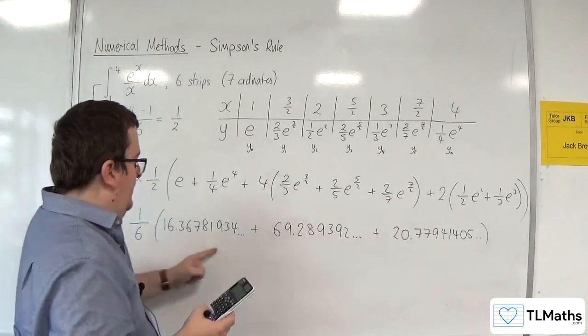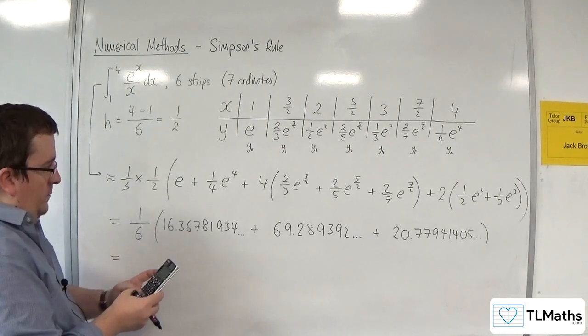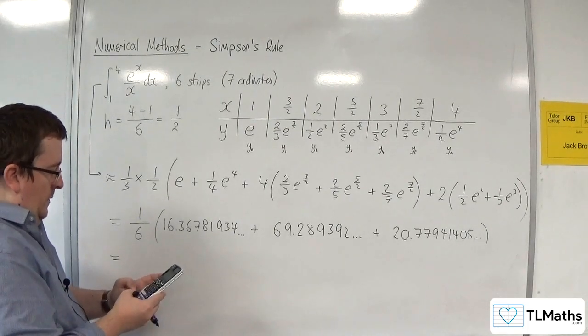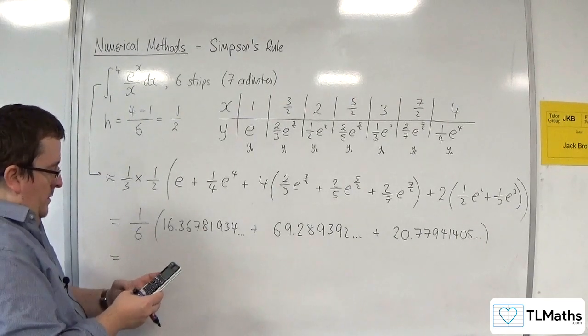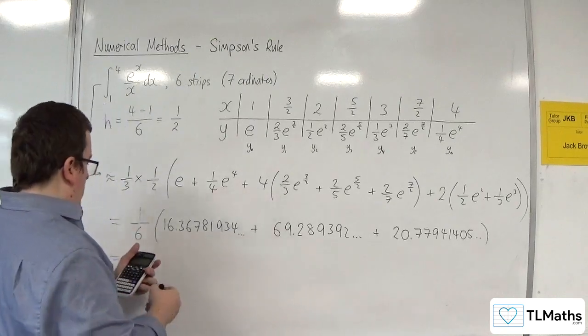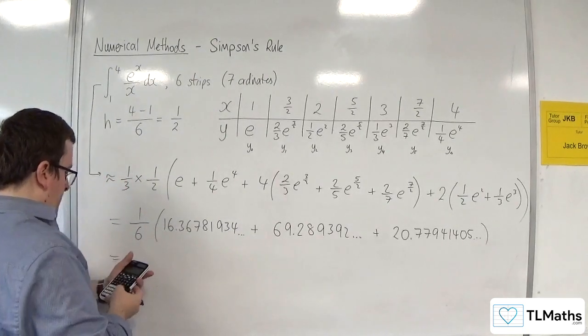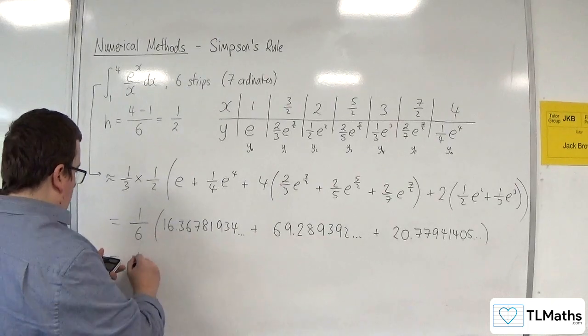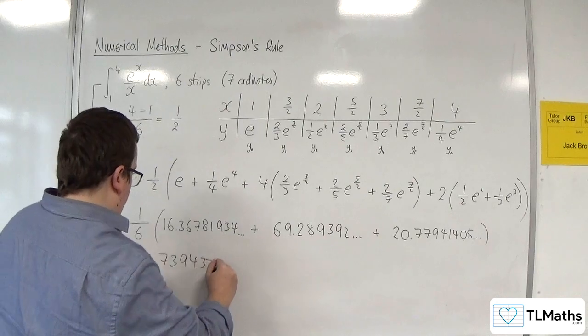All right, so I'm going to add these bits in the bracket. Okay, so 1 sixth of 106.436. So we should get 17.73943756.